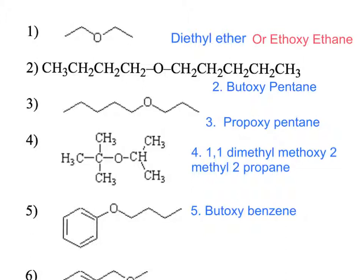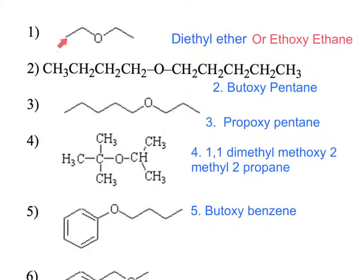In this first example we have two carbons on each side, so we would call this ethyl ethyl ether or diethyl ether. Using IUPAC rules we name the longest chain — in this case ethane — and name the other chain as ethoxyinstead of ethyl, dropping the -yl and adding -oxy, so we would call this ethoxyethane.